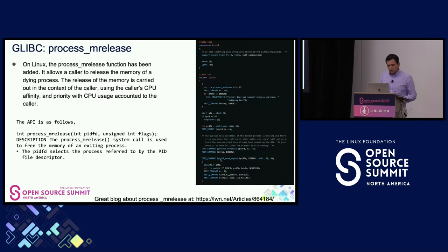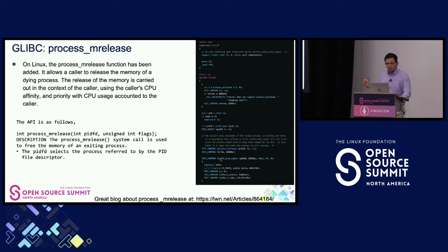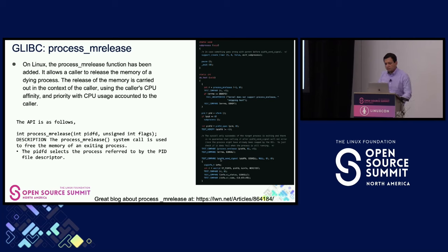GLIBC, since 2023, improved the process release. On Linux now the process_release function has been added to GLIBC, and allows the caller to release the memory of a dying process. GLIBC will allow us to do this from a system call perspective. The release of the memory is carried out in the context of the caller, using the caller's CPU affinity and priority as a condition. This is a very simple example of how we can use process_release — it's now available as a system call from the GLIBC perspective, which is great for us as developers.